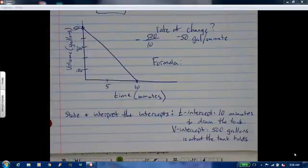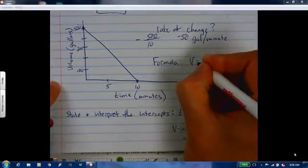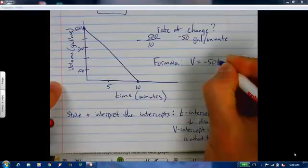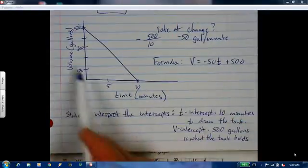On this one, we're just going to go straight to slope-intercept form. So my y-intercept would be 500. What's my rate of change? What's my slope? Negative 50. So it would be v equals negative 50t plus 500. Use the formula that they give you in that case.